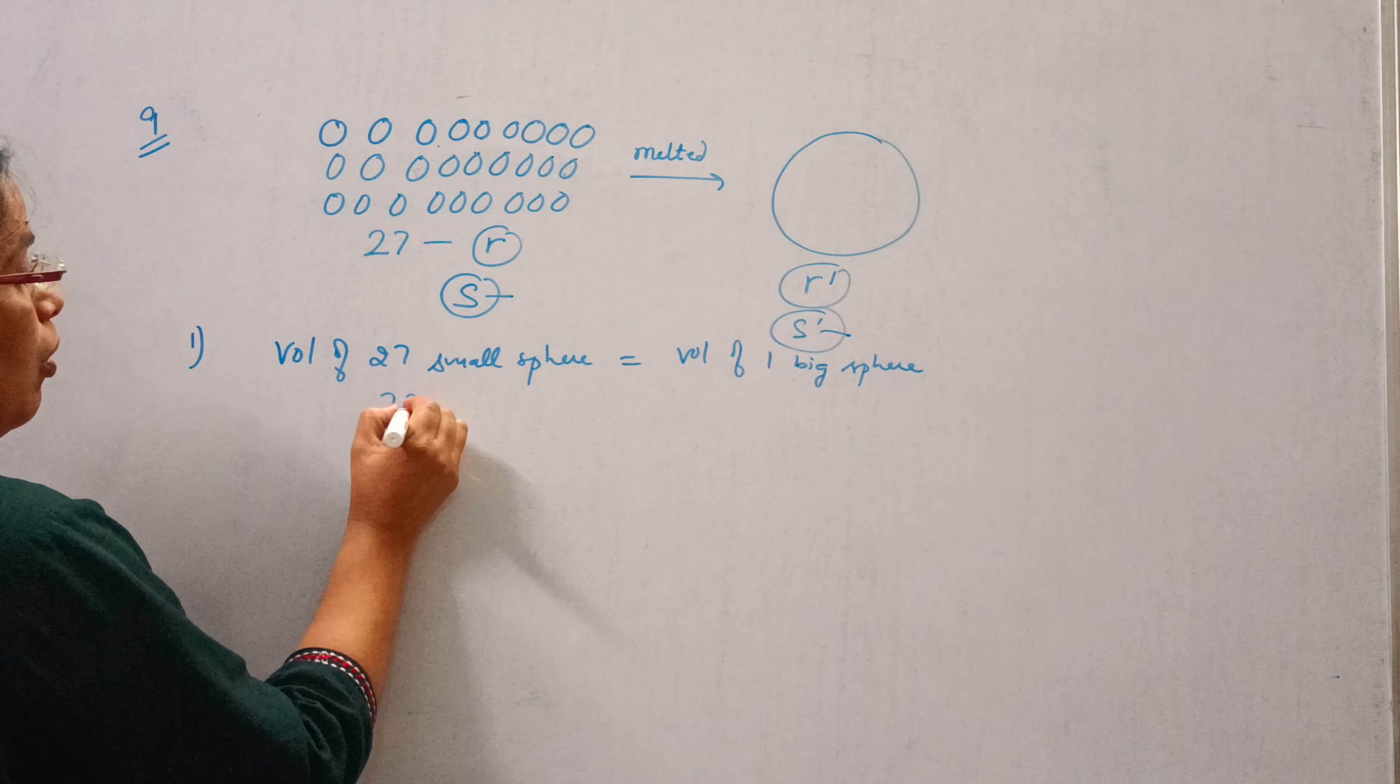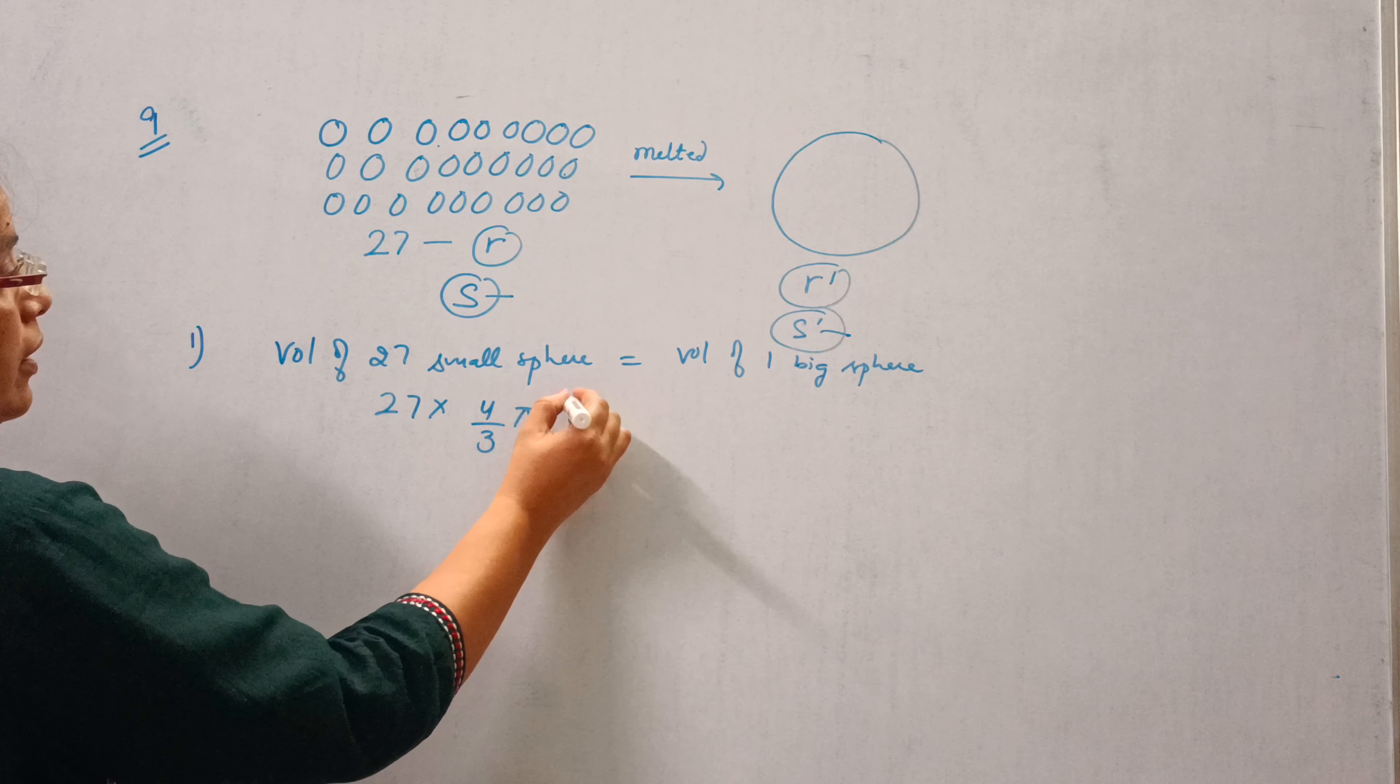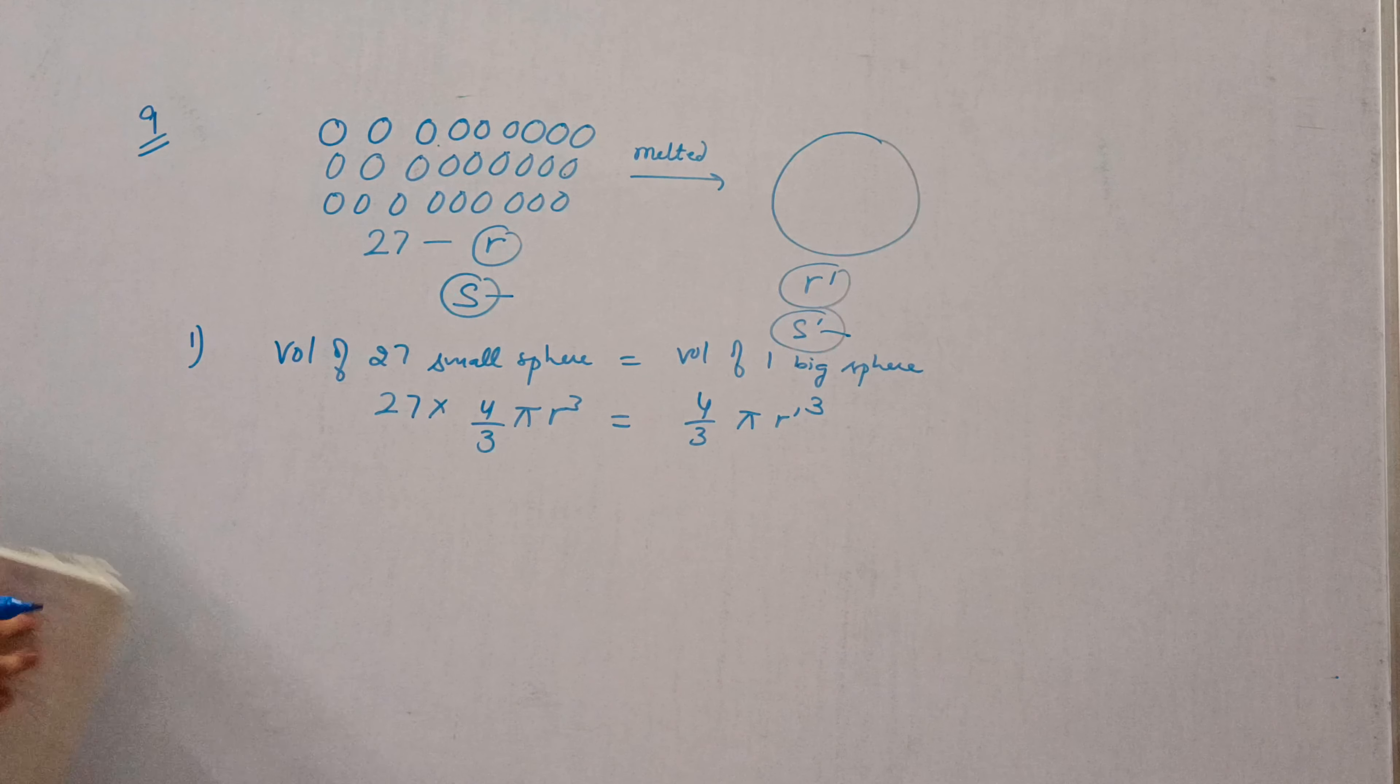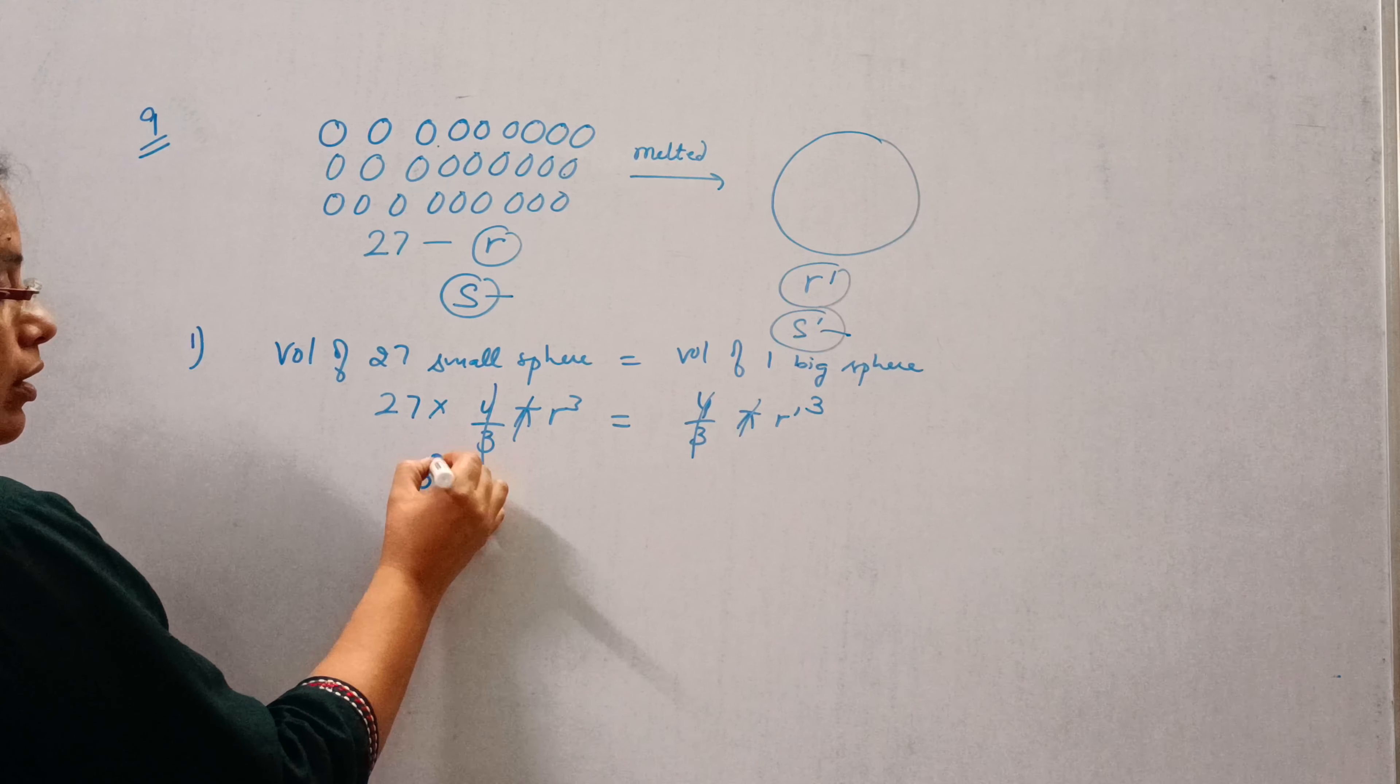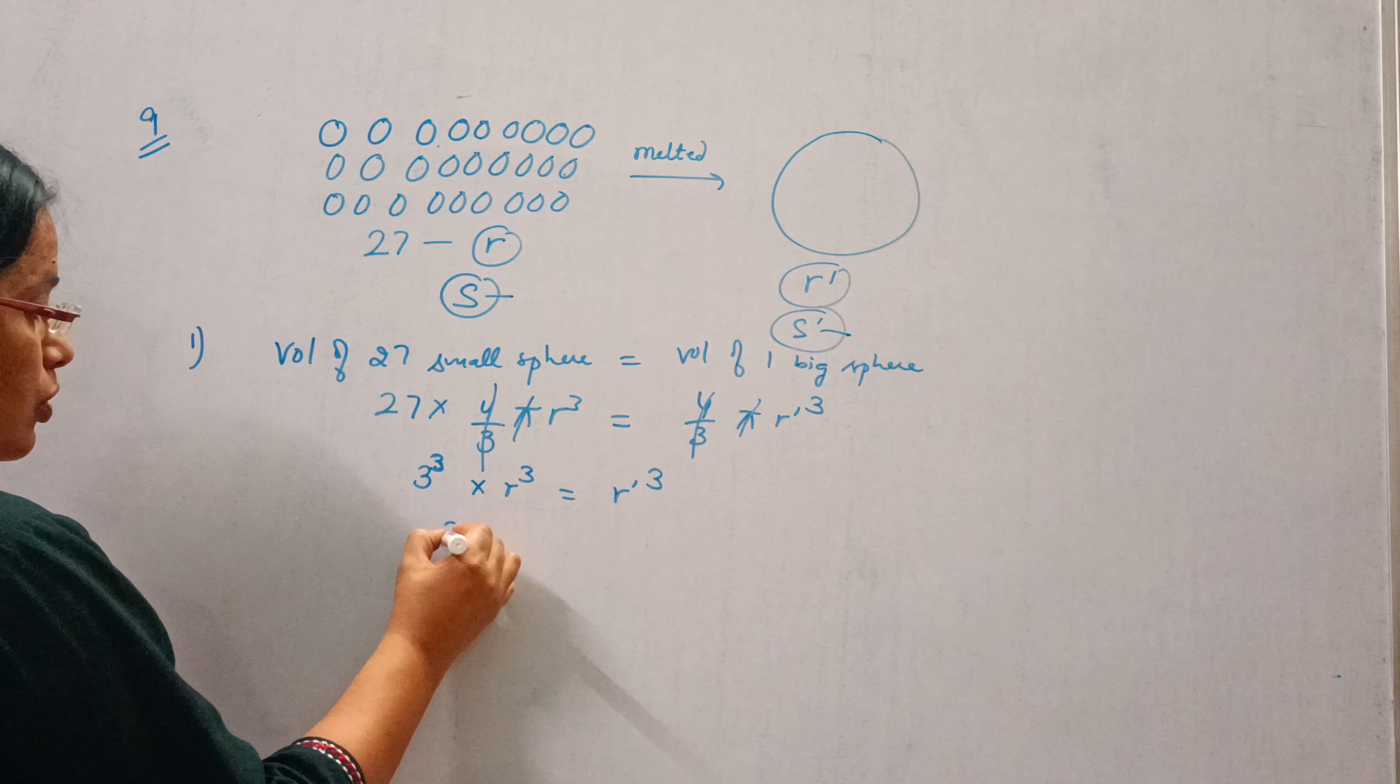Volume of small sphere will be 4 by 3 pi R cube and big sphere will be 4 by 3 pi R dash cube. Now we can cut 4 by 3 by 4 by 3 and pi by pi. 27 we can write as 3 cube, cube root of 3, and this is cube of R, R dash 3.